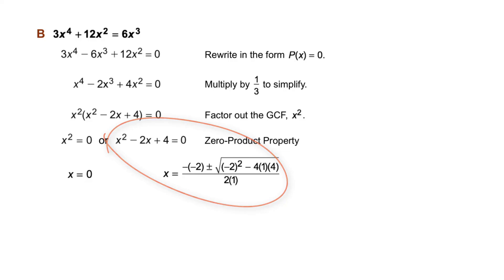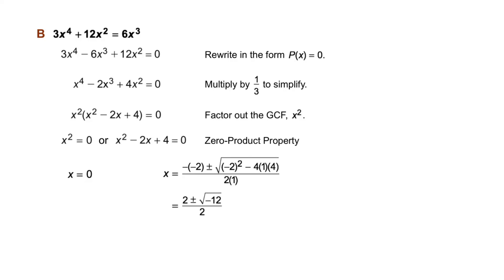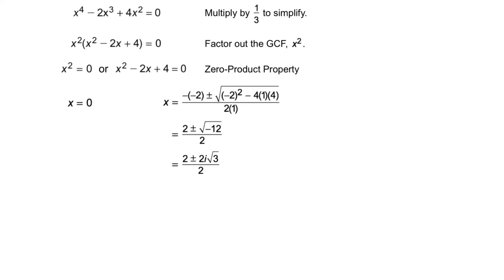So x equals the negative of negative 2 plus or minus the square root of negative 2 squared minus 4 times 1 times 4, all over 2 times 1. That simplifies to 2 plus or minus the square root of negative 12, all over 2. That's 2 plus or minus 2i times the square root of 3, over 2. And that simplifies to 1 plus or minus i times the square root of 3.